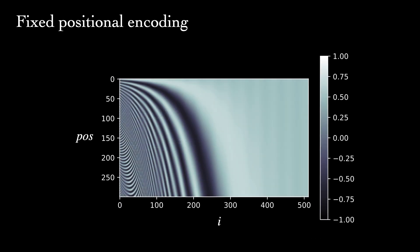Let's visualize these encodings. We have the encodings for the first 300 sequence positions. The x-axis is the dimension index—there are 512 in total—and the y-axis is the position. As we go down the y-axis, we see the encoded values alternate between light and dark, that is, high and low numerical values, but at slower rates for greater dimensions.